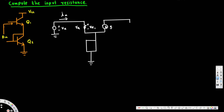The voltage across r51 is v51, and here we will have a current source that is gm·v51. Now here we will have r52, with voltage across it v52, and the current source here will be gm·v52.